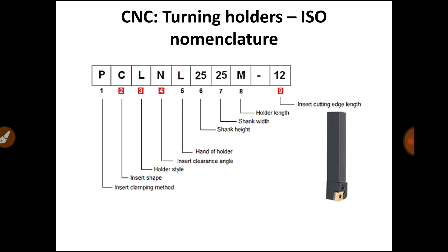You can see 9 different locations. At location 1, capital letter P; at location 2, capital C; at location 3, capital L; at location 4, N; at location 5, L; at location 6, 25; at location 7, again 25; at location 8, capital M; and at location 9, 12.